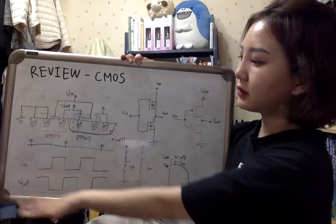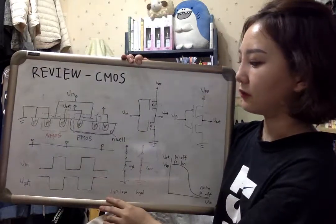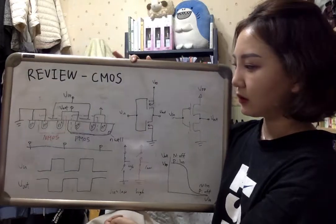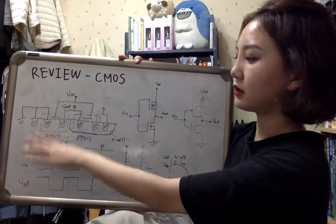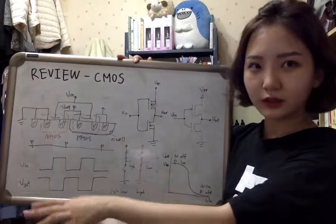And this is the graph of clock signal. We can check the input signal and output signal are opposite each other.